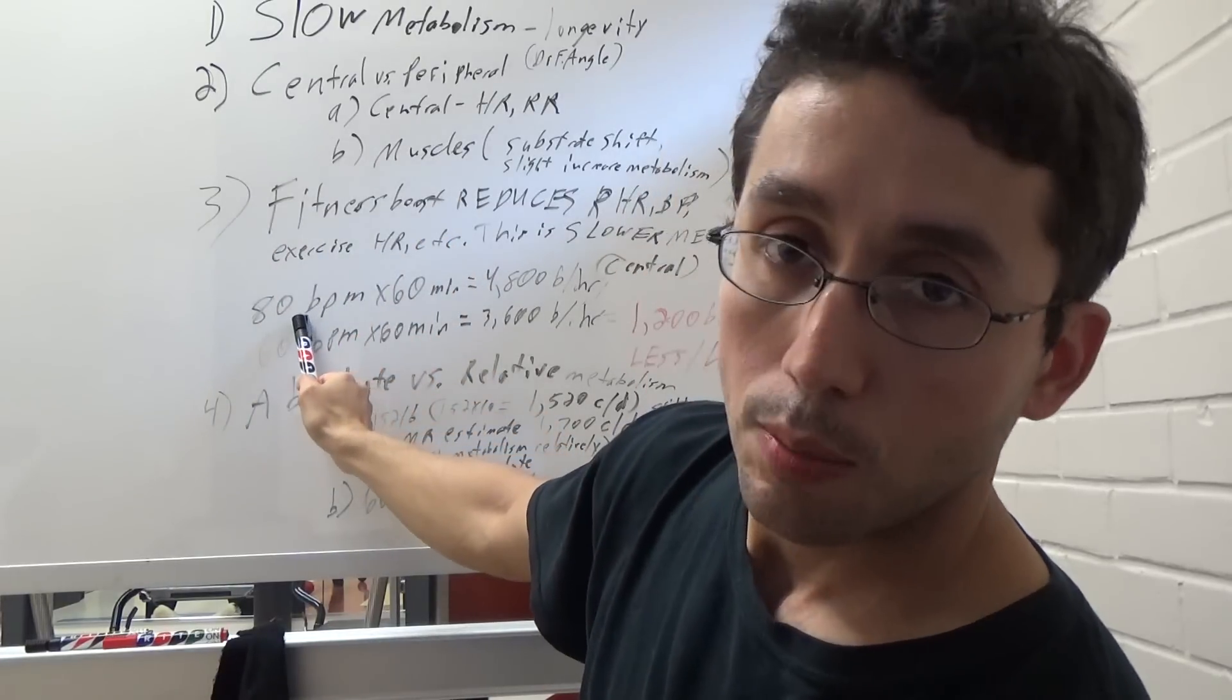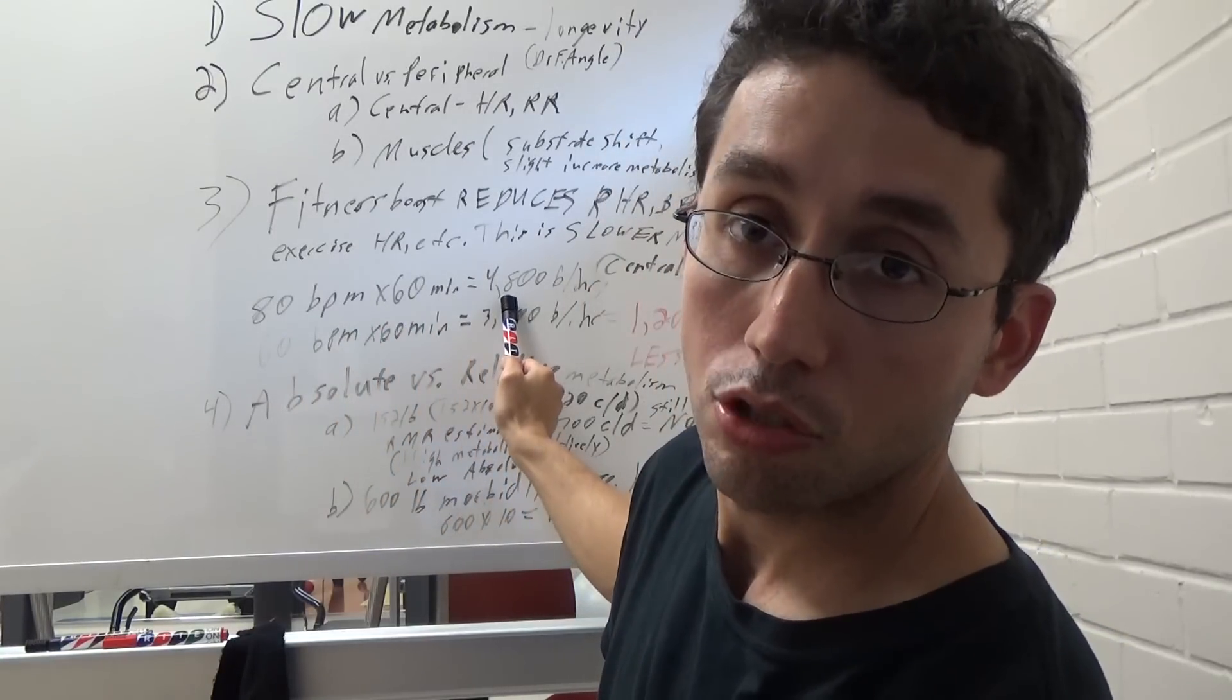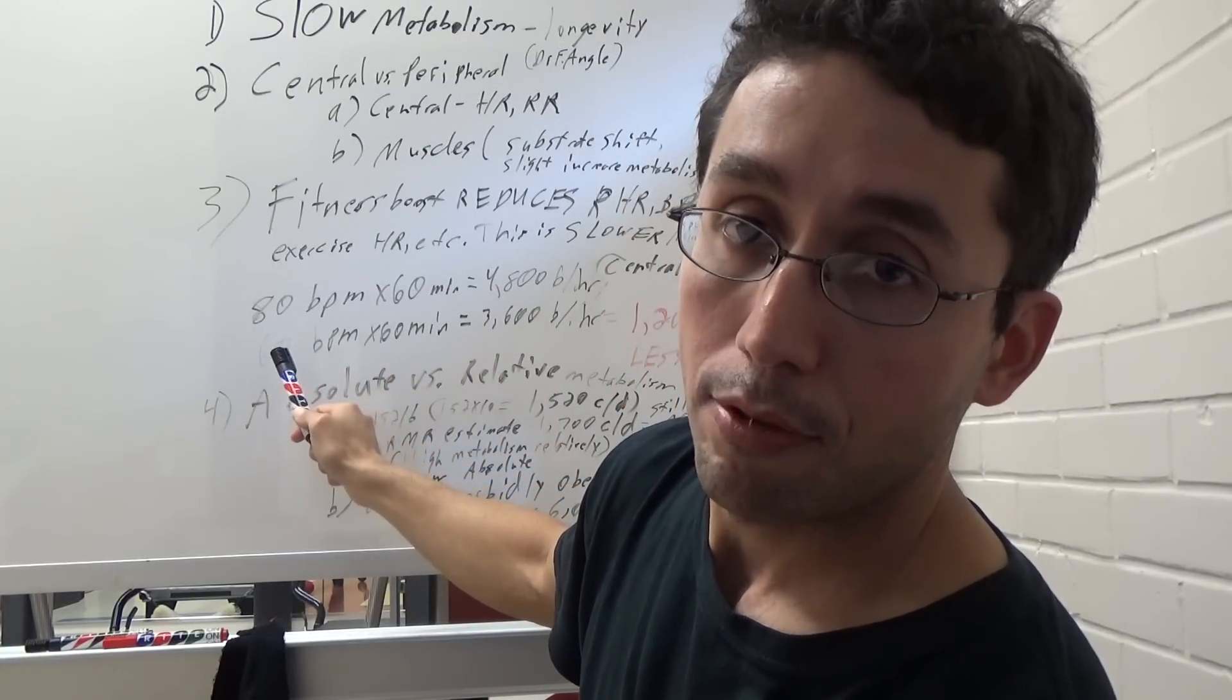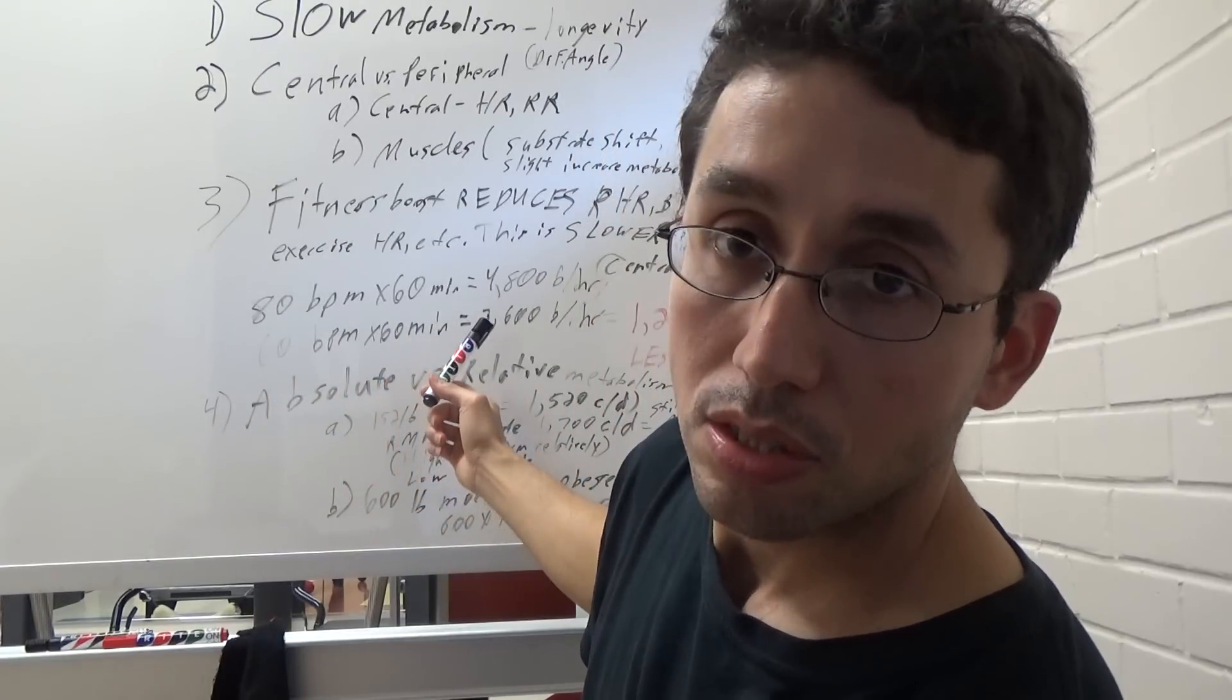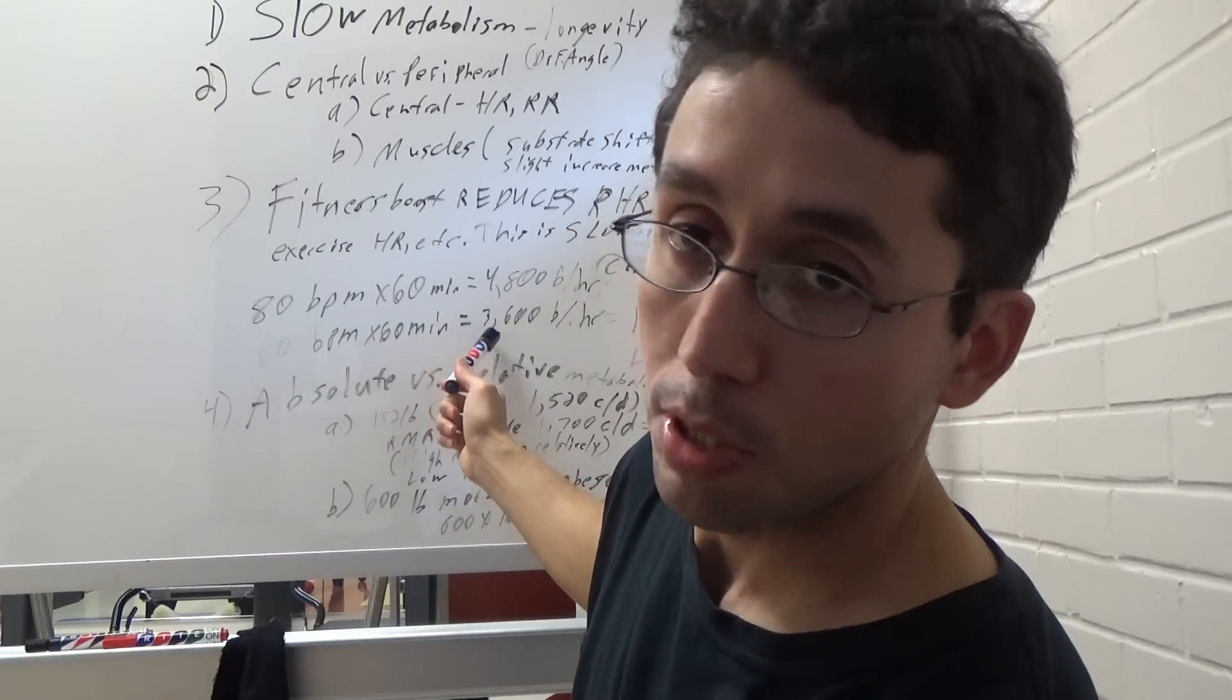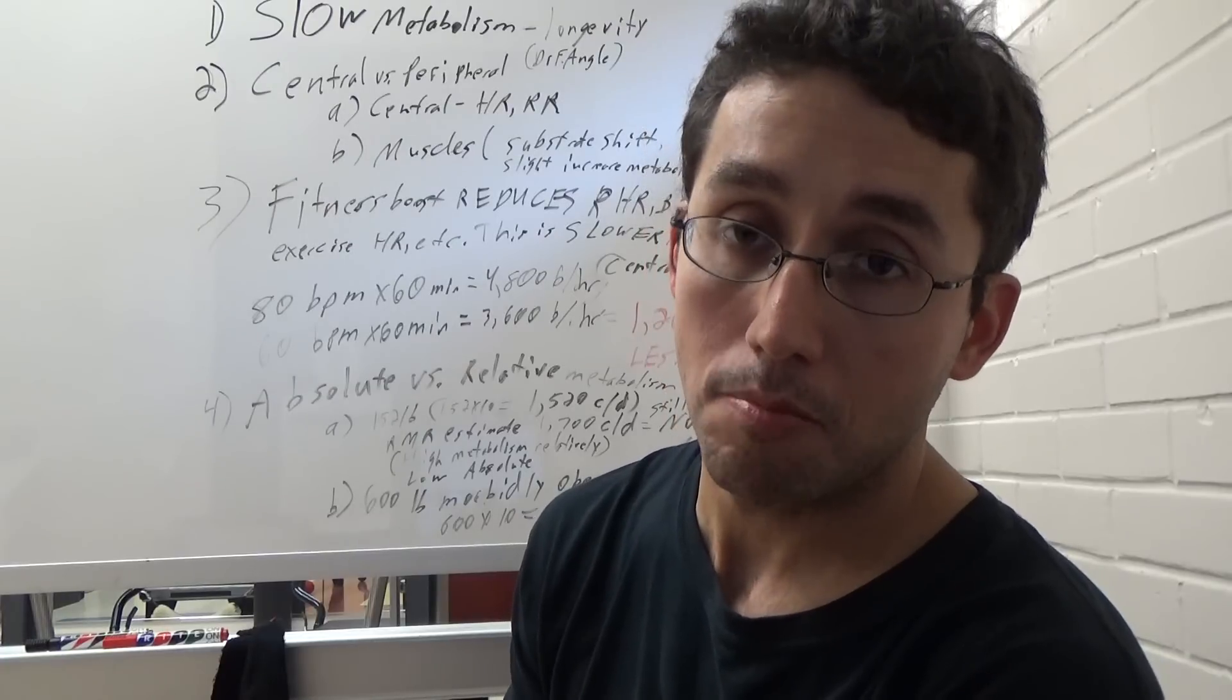If you take someone who's sedentary and their resting heart rate is 80 beats per minute, multiply that by 60 minutes, that's 4,800 beats per hour. Now, let's say that same person becomes fitter. Now it's 60 beats a minute, so they drop the resting heart rate from 80 to 60. Multiply that by 60, you get 3,600 beats per hour. That's 1,200 beats less per hour. So now it's kind of like they're saving beats, a conservation.